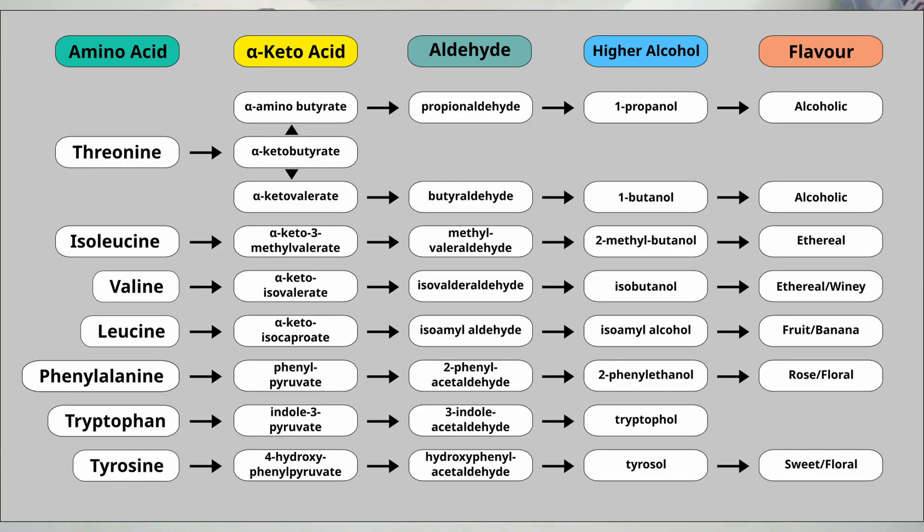Okay, so here's the list. As we can see on the left we have the amino acid followed by the alpha-keto acid, then the aldehyde, then the higher alcohol. The first amino acid is threonine. It gets turned into alpha-ketobutyrate, then butyraldehyde and propionaldehyde, then into one-butanol and one-propanol. These two compounds just have a sort of alcoholic flavor to them. They're really not all that complex.